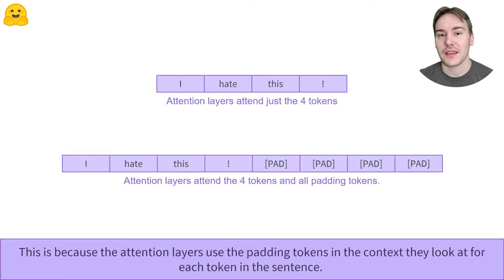No. If you remember that transformers make heavy use of attention layers, this should not come as a total surprise. When computing the contextual representation of each token, the attention layers look at all the other words in the sentence. If you have just a sentence, or the sentence with several padding tokens added, it's logical we don't get the same values.